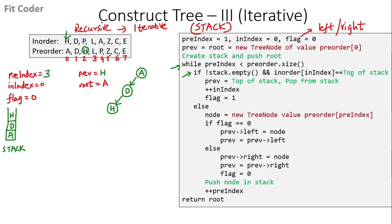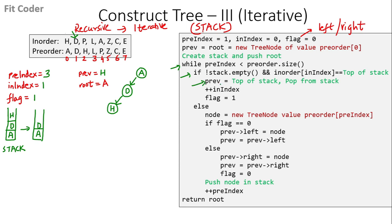In the next iteration, both the top of the stack and the in-order index are equal to H. We set previous equal to H (the top of the stack), pop from the stack, increment in-index to 1, and set flag to 1. In the following iteration, the top of the stack is D and the in-order index also points to D — they are equal. We set previous to D, pop from the stack, increment in-index to 2, and flag remains 1.